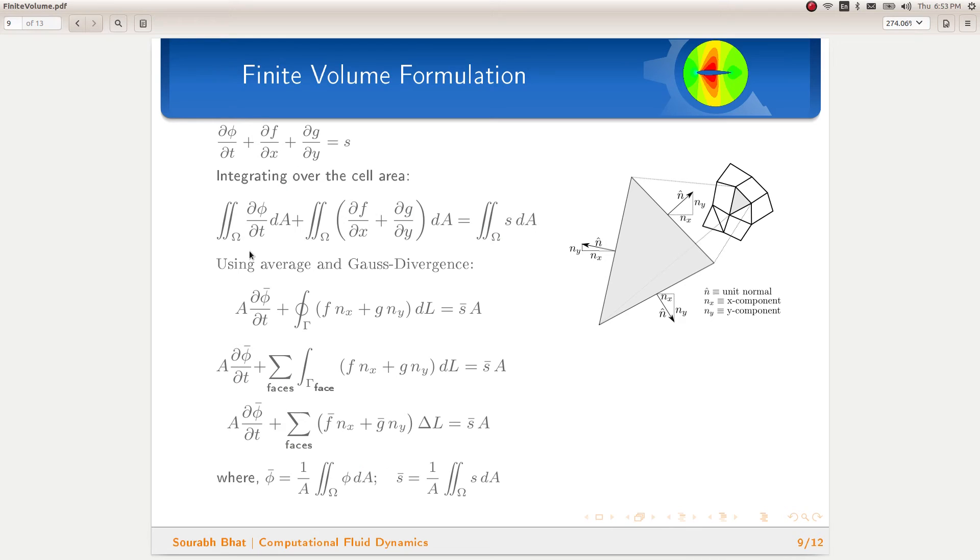Now comes the step of simplification, which leads us to the finite volume formulation. We can simplify the first term by using the average of phi, which is defined as the integral of phi divided by area of the cell. Similarly, the integral of the source term gets simplified by using the definition of average of the source term.